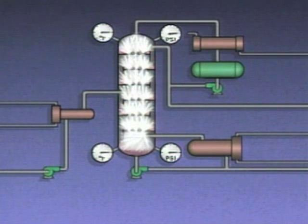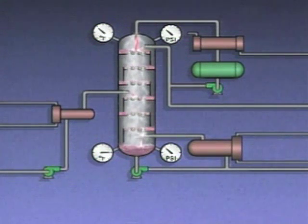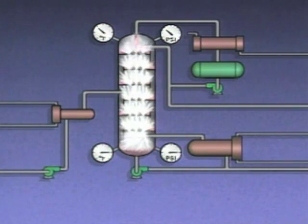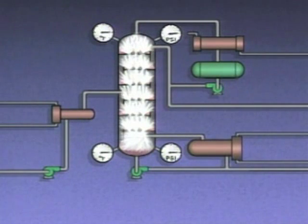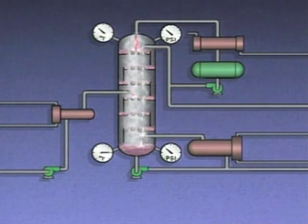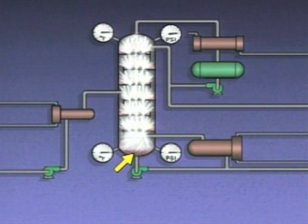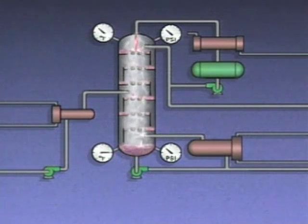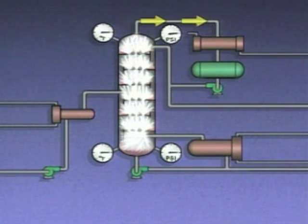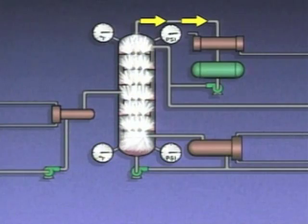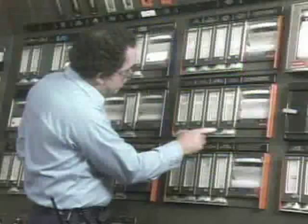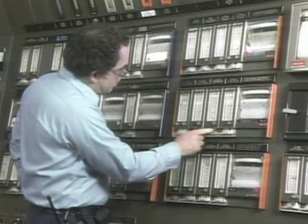Now, if puking develops, the surge of liquid and vapor up and down the column can cause fluctuations in the pressures and temperatures, as well as in the level of liquid in the bottom of the column. Also, liquid that's forced out of the top of the column can cause a sudden rise in the level in the receiver.